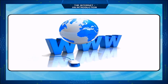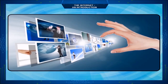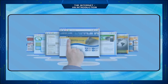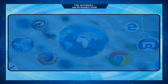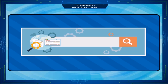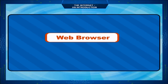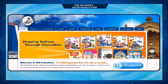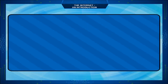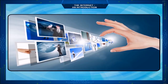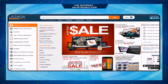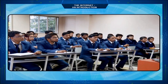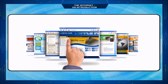Now let us look at basic terminologies related to the internet: the World Wide Web (WWW), website, web pages, web browser, home page, and search engines. A web browser is software that allows you to view and explore information on the web. A website is a collection of web pages containing information related to a particular company, topic, or institute.